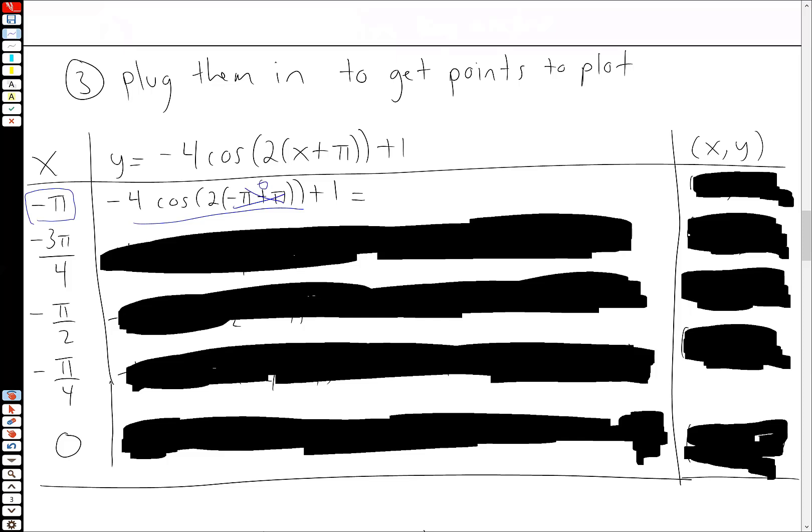So you'll have 0 times 2, which is 0. So this just becomes -4 cos of 0 plus 1. Now looking at your unit circle, remember cosine of 0 is 1. So this will become -4 times 1 plus 1, which is -3. A very nice output there. Not too shabby. So the point that's on our graph is minus π comma minus 3.